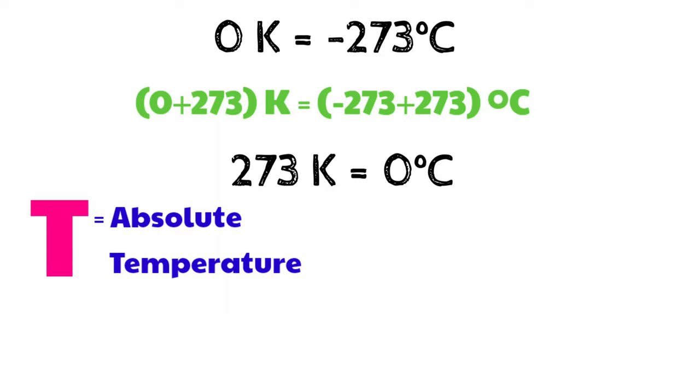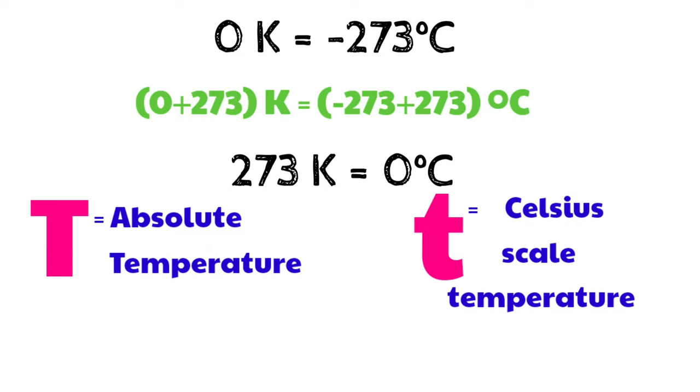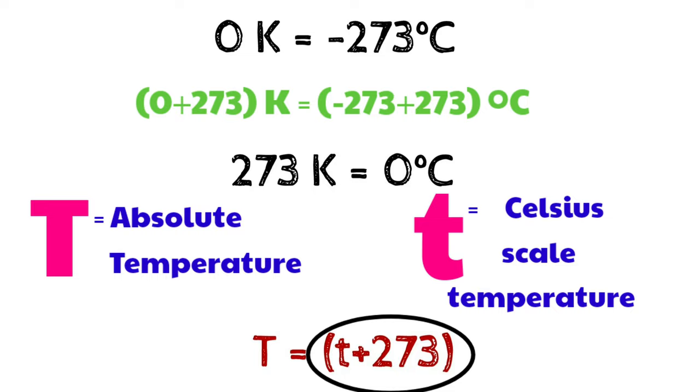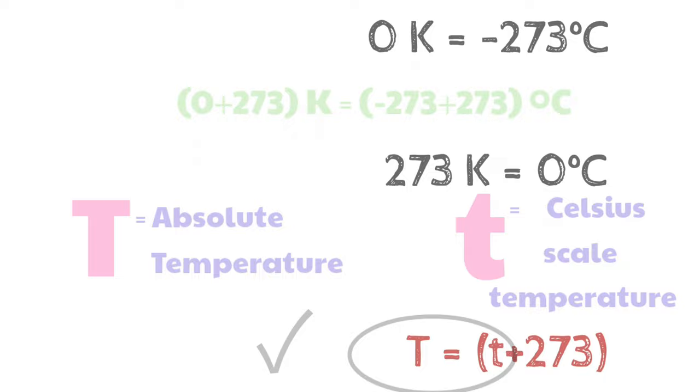Now let's consider capital T denotes the absolute temperature and small t denotes the temperature in Celsius scale. So the relation between Kelvin and Celsius scale looks like this. This means if we add 273 with Celsius scale temperature, then we will get absolute temperature or the temperature in Kelvin scale.